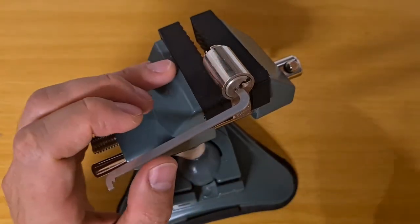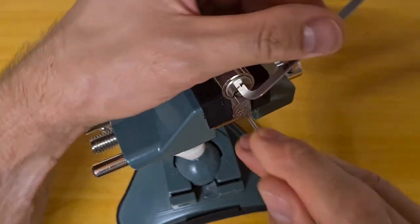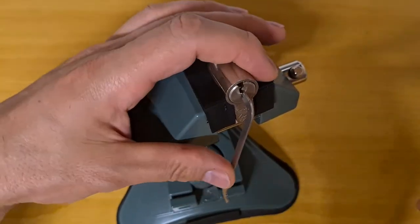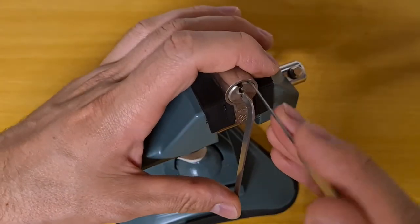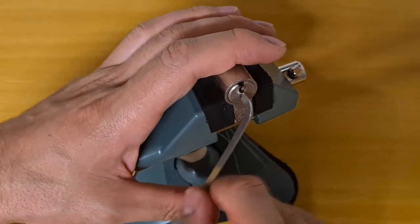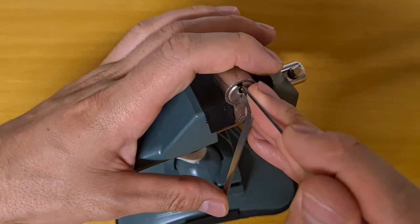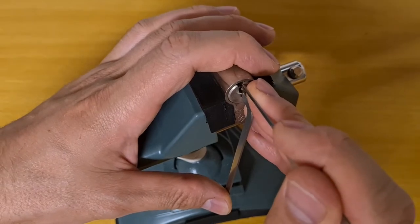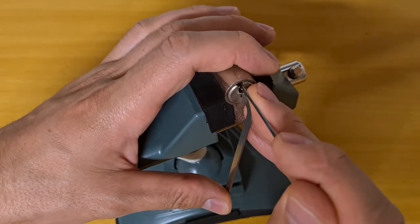And we got an open. Let's make it 360 and pick it the other way. One is binding, just reset everything. And one is loose, two is binding.